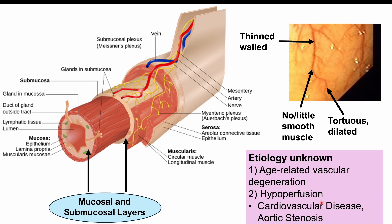The etiology is not entirely understood. It's believed there may be age-related vascular changes causing degeneration of the vasculature, leading to formation of weaker new blood vessels that are thin-walled, tortuous, dilated, and prone to bleeding. Alternatively, hypoperfusion — insufficient blood flow due to cardiovascular disease or aortic stenosis — may cause the vasculature to compensate by producing these abnormal, weaker vessels.